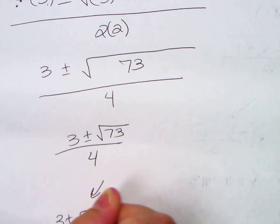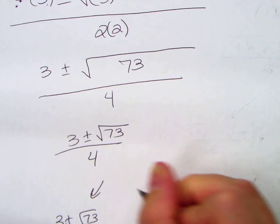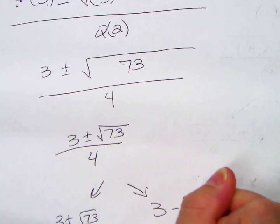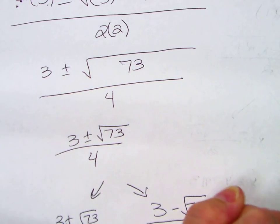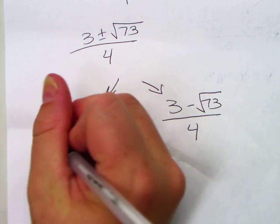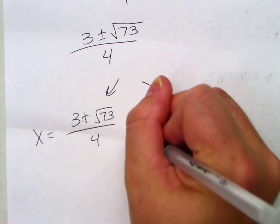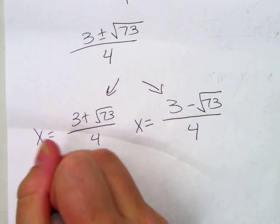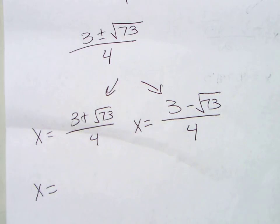Break it into 2. 3 plus radical 73 all over 4. 3 minus radical 73 all over 4. You can leave it like this if we're just finding the x. If we're going to be graphing it, you really want to find the decimal.